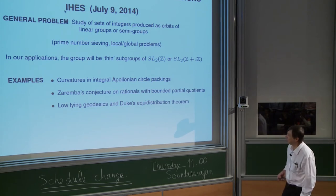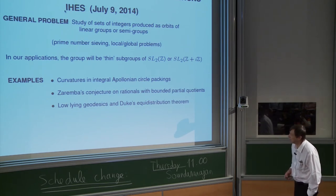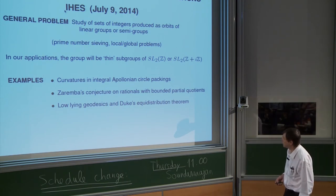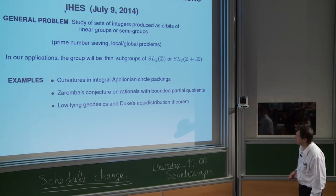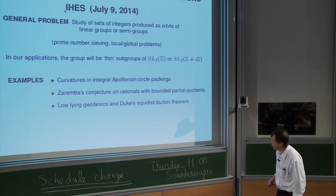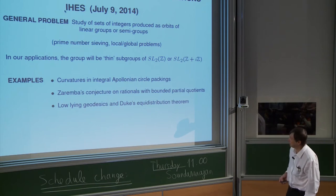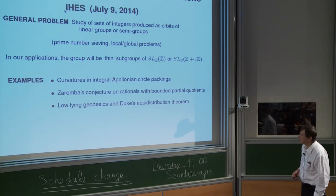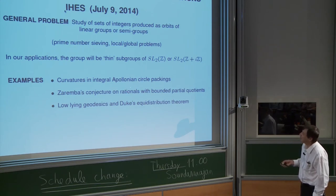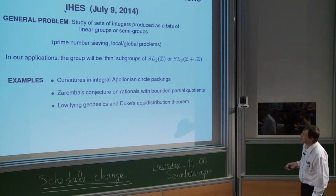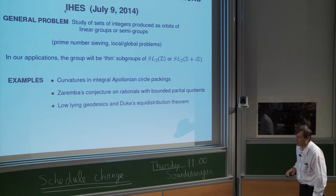I want to focus on the main ideas and methods involved. I will give introductory material and background on the level of the techniques involved, in particular the results on spectral gaps and also the counting methods. Then I want to discuss certain applications: applications to integral Apollonian circle packings, to problems around rationals with bounded partial quotients and Zaremba's conjecture, and ongoing work with Kontorovich around Duke's distribution theorem in real quadratic fields and the problem of low-lying geodesics.